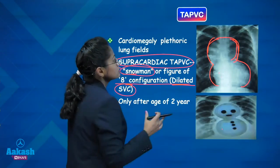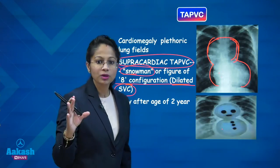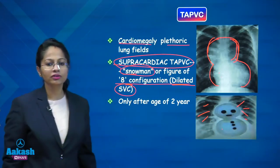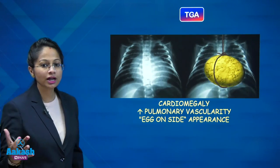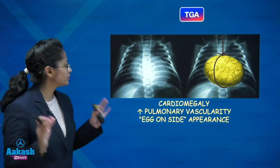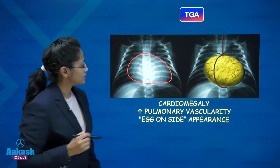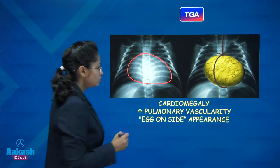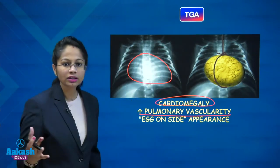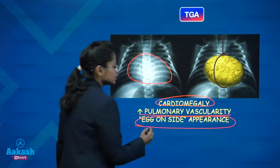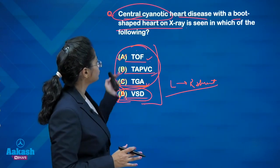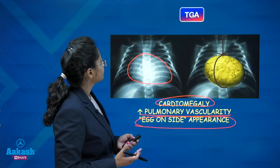So the answer for boot-shaped heart is Tetralogy of Fallot. These are all important MCQ X-ray findings — this time they asked about the boot-shaped heart, but next time they may ask about any of these appearances. Now the next question.